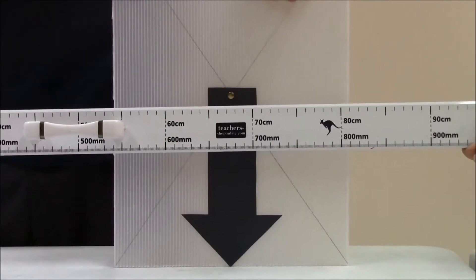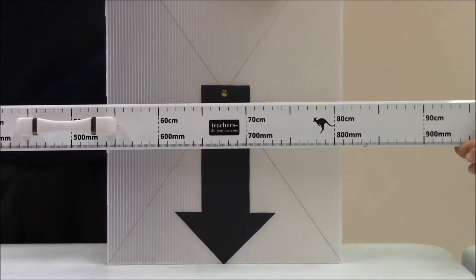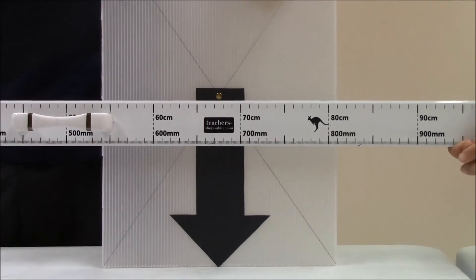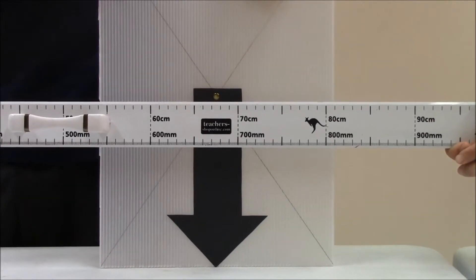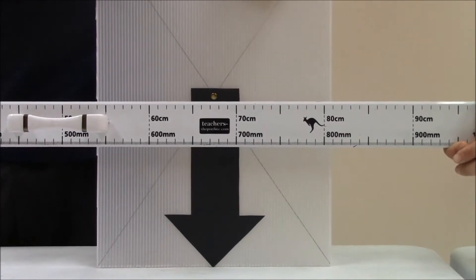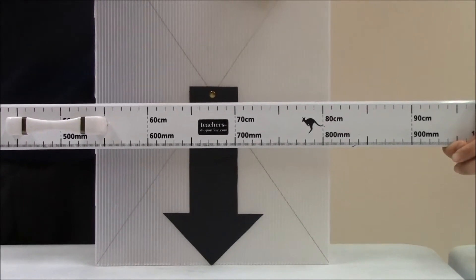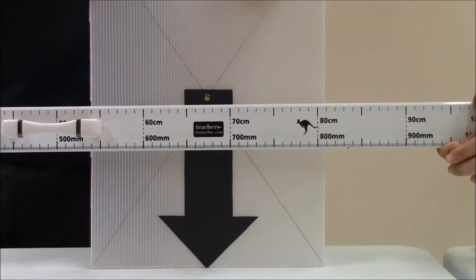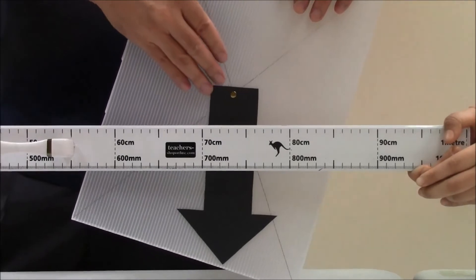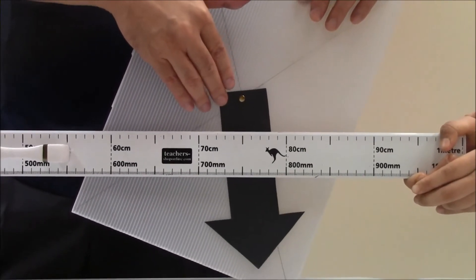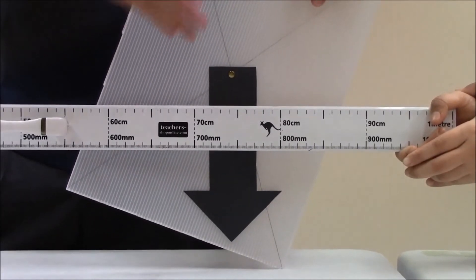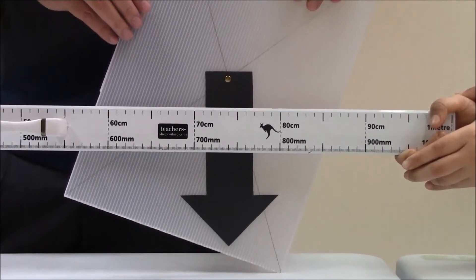Right now we are going to examine the height of the center of gravity for the three conditions that we have mentioned. We will see which condition will give us the highest position of the center of gravity. Let's look at the first condition where the line of weight is within the base of the board. Take note of the rise in the height.